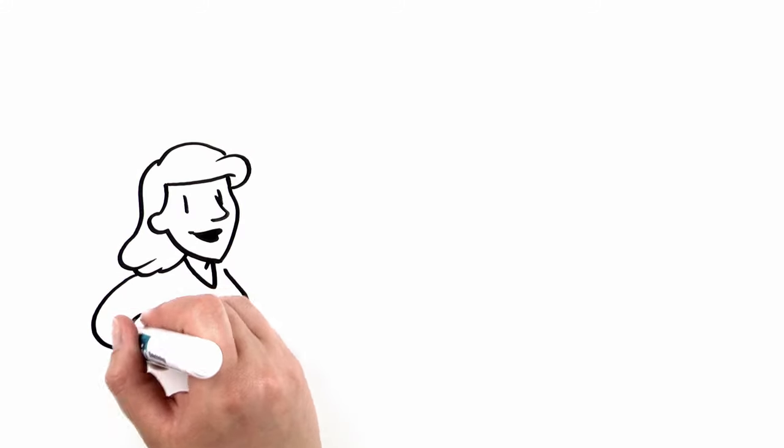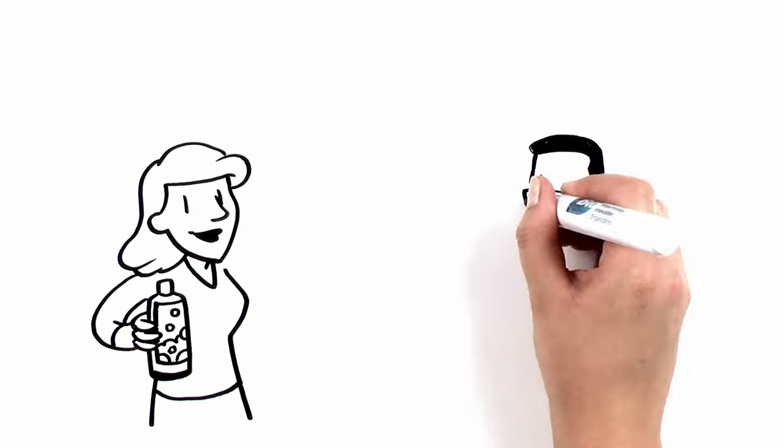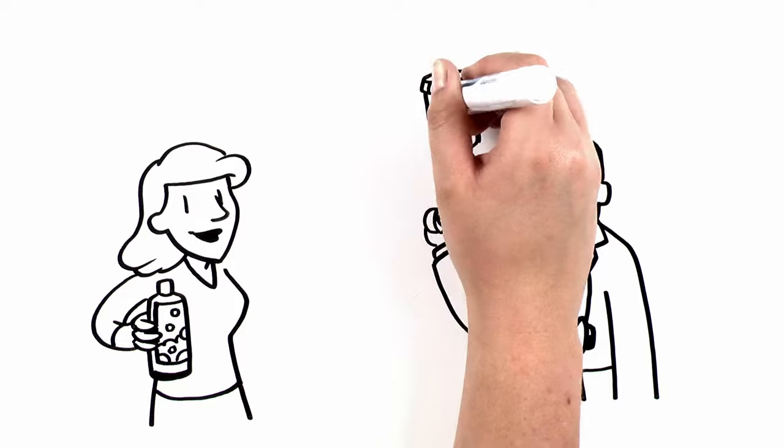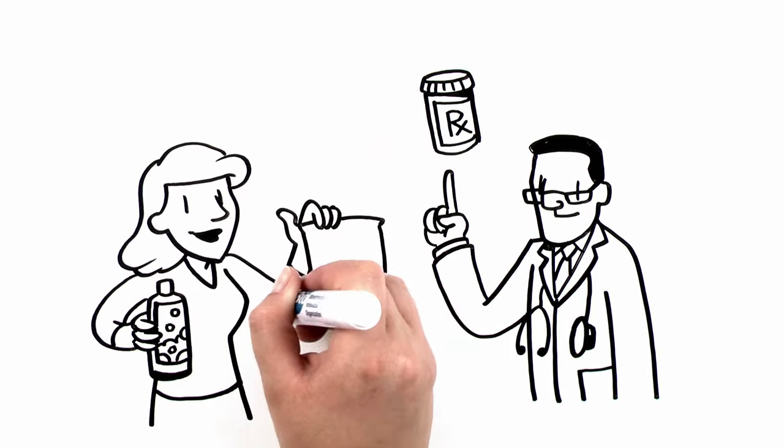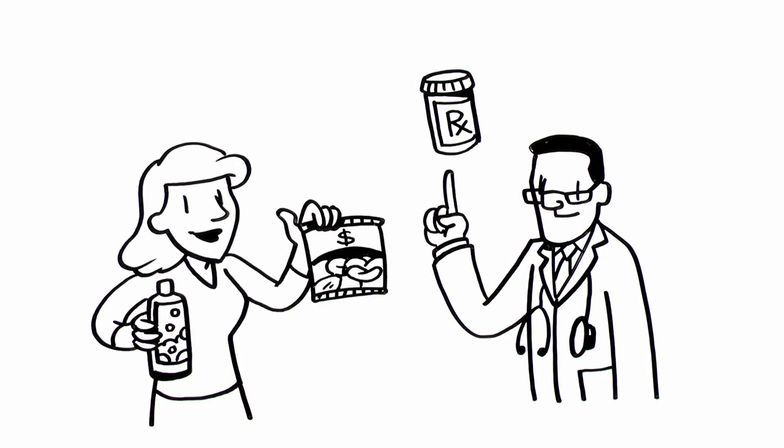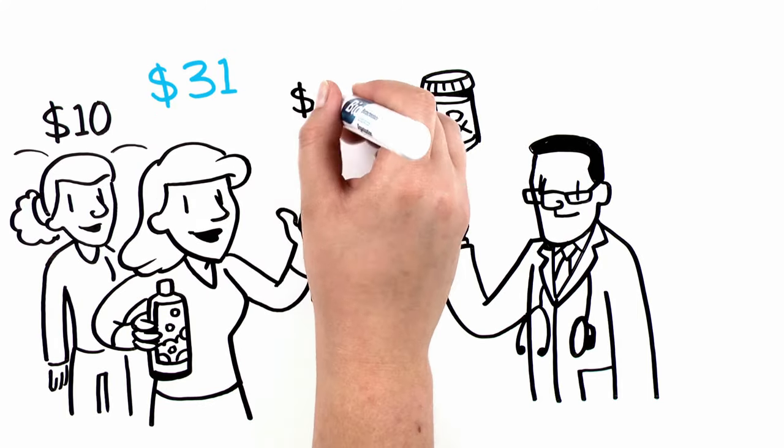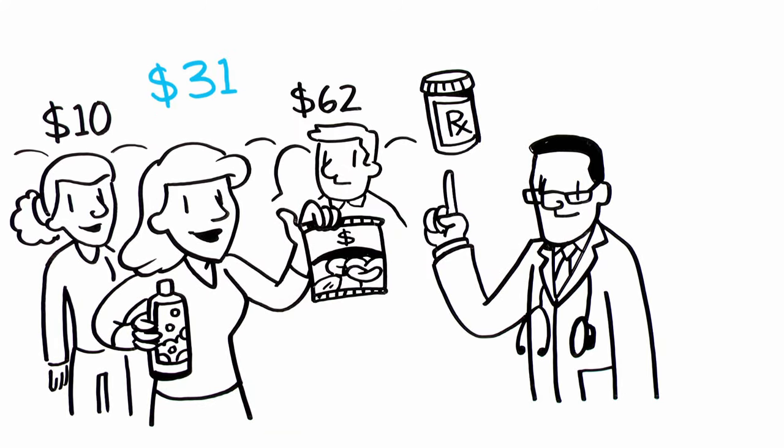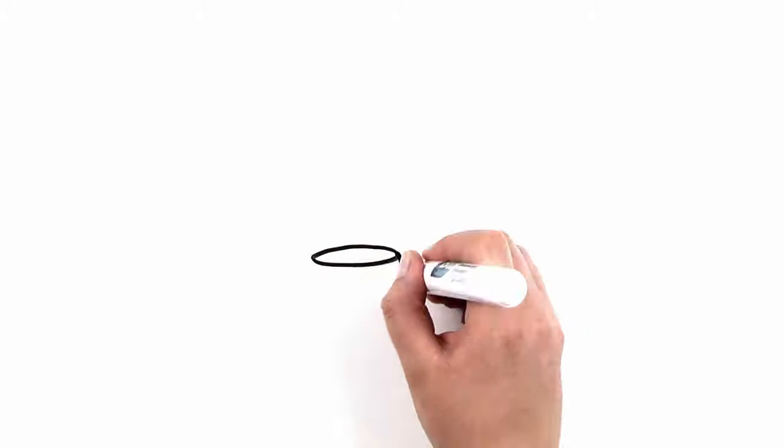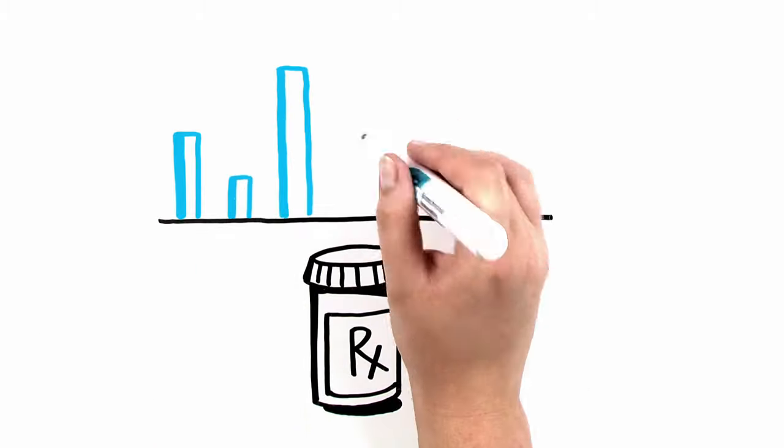While you choose which brand of shampoo to buy, your doctor chooses which brand of drug you need. And while everyone pays the same price for the chips, you may pay more for the same prescription than the person next to you and less than the person next to her. How are prescription costs really determined?